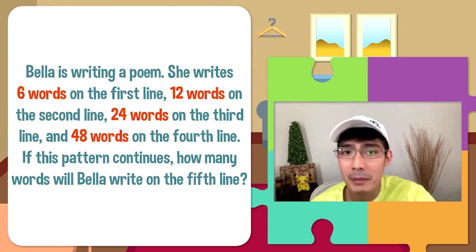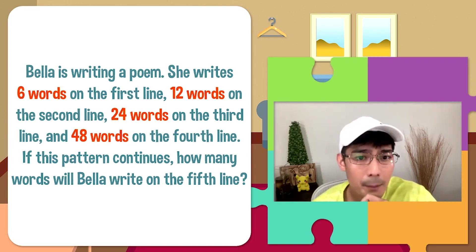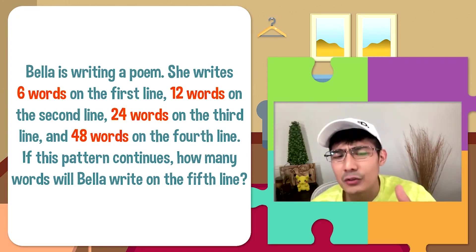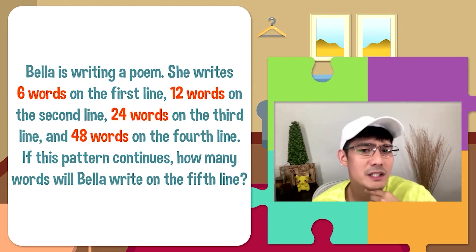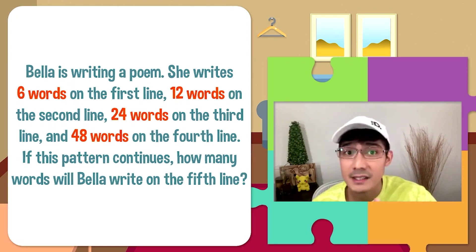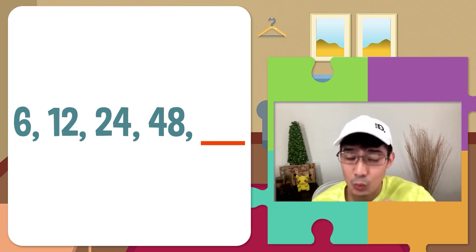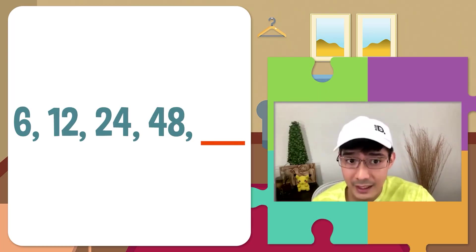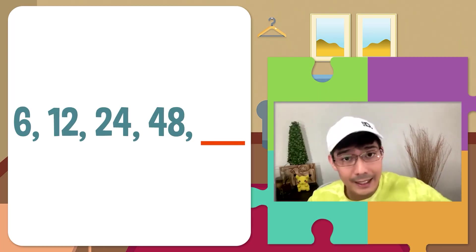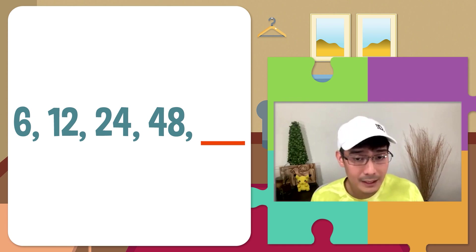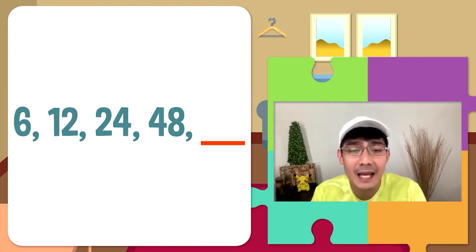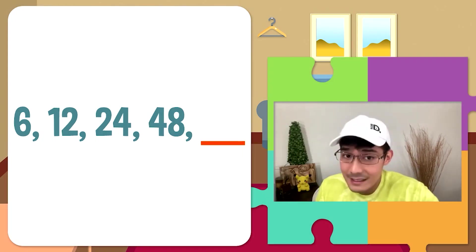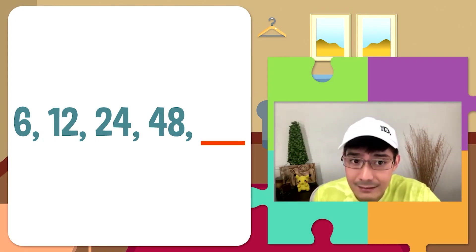Grabe naman itong si Bella! Para mas madali, kunin natin yung number sequence which is 6, 12, 24, 48. At kailangan natin hanapin ng maigi yung fifth term sa ating sequence, dahil ito na ang last escape room natin.